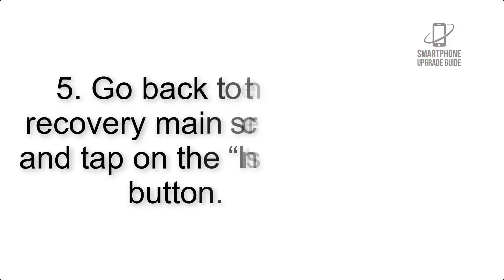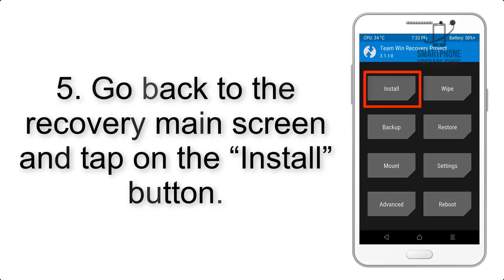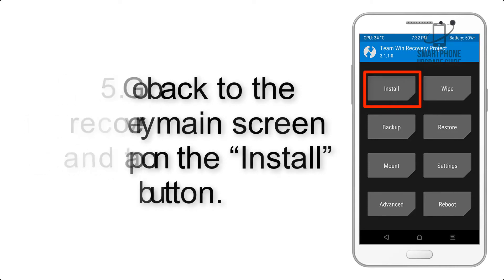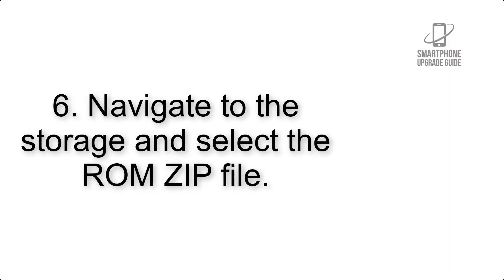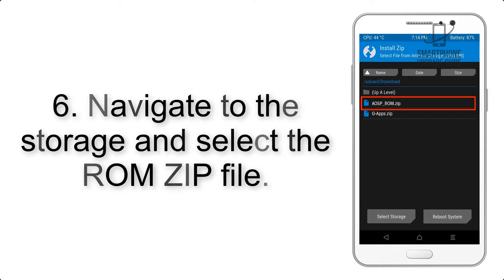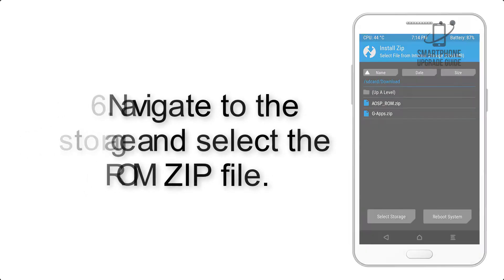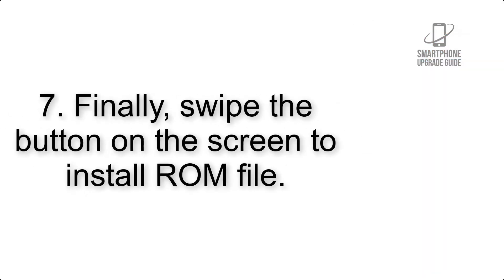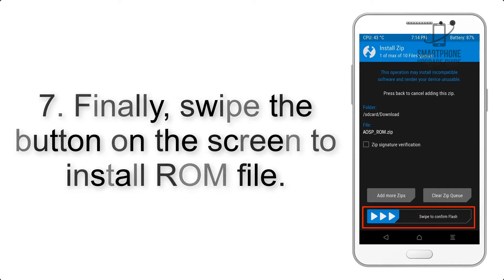Step 4: Swipe the button to wipe the device. Step 5: Go back to the recovery main screen and tap on the Install button. Step 6: Navigate to the storage and select the ROM zip file.